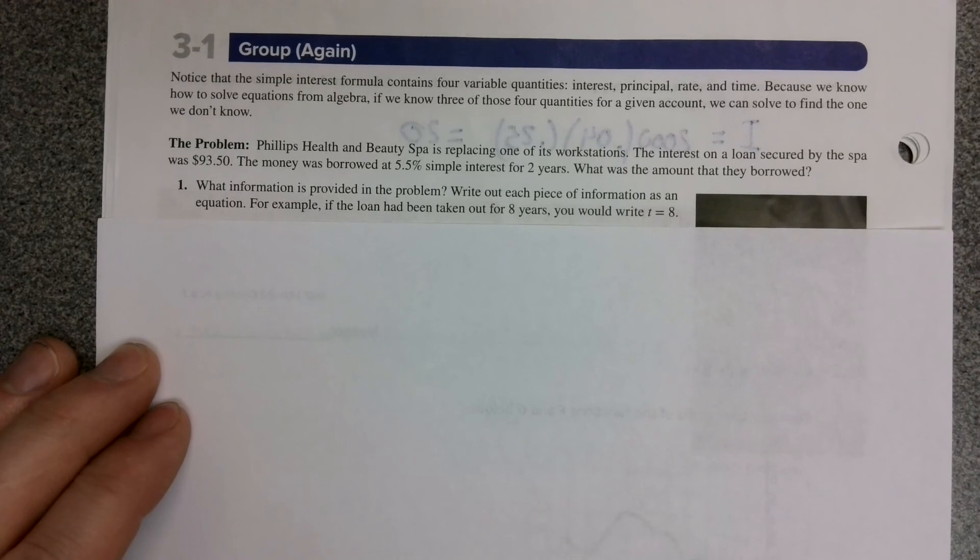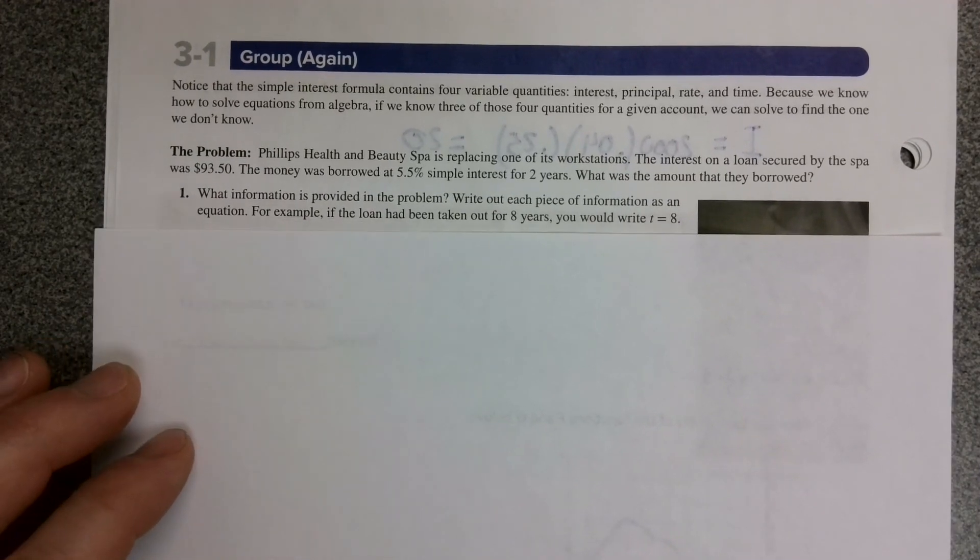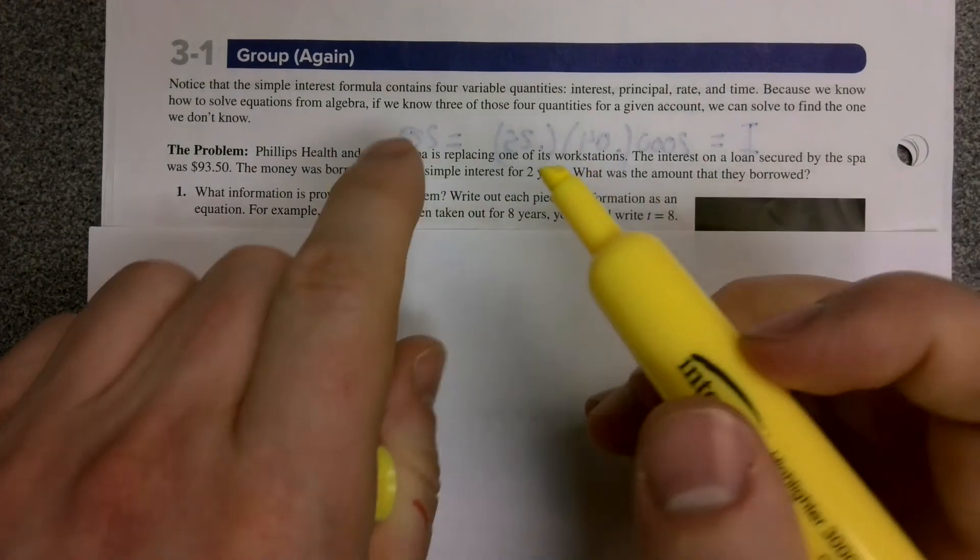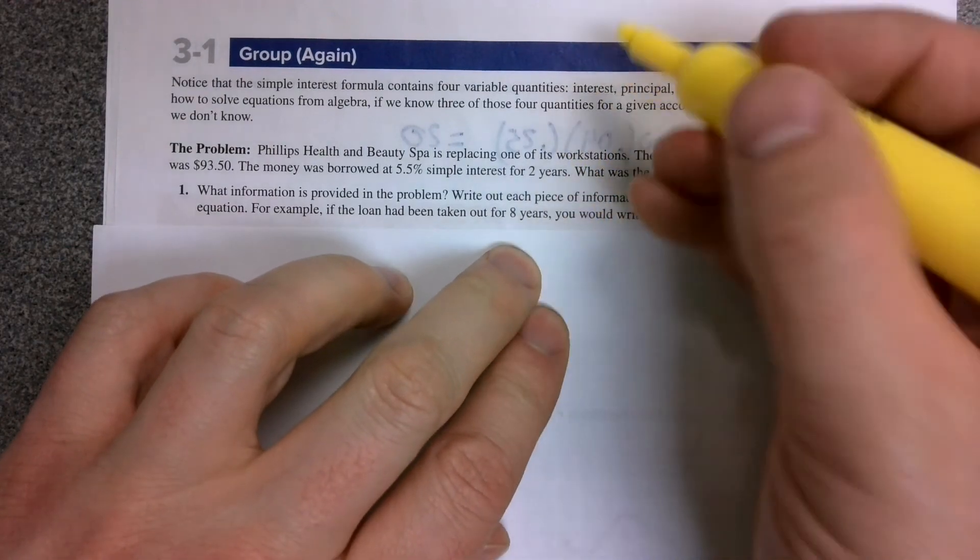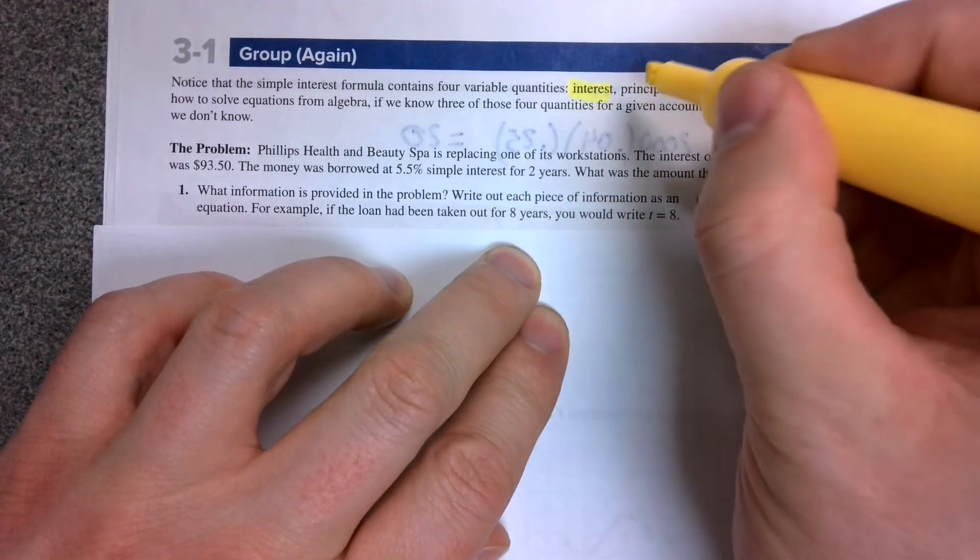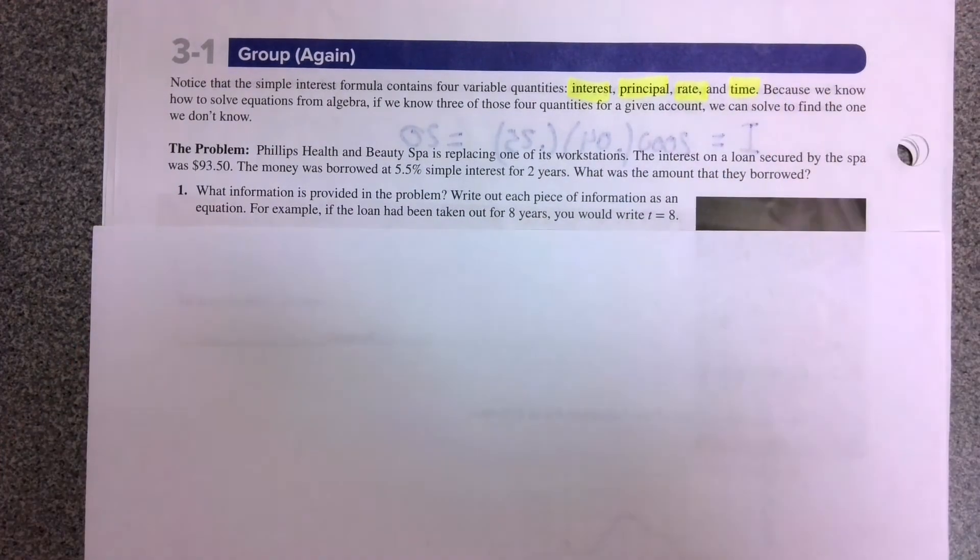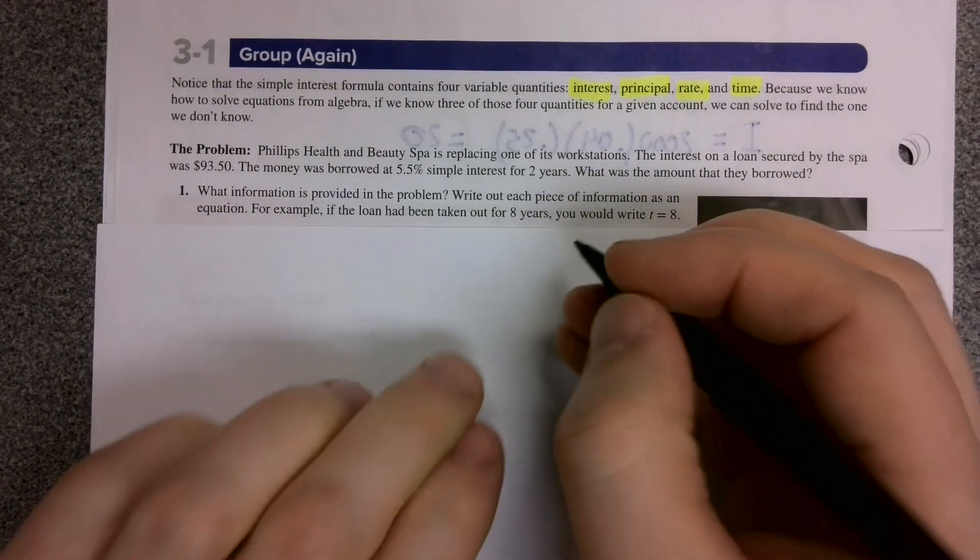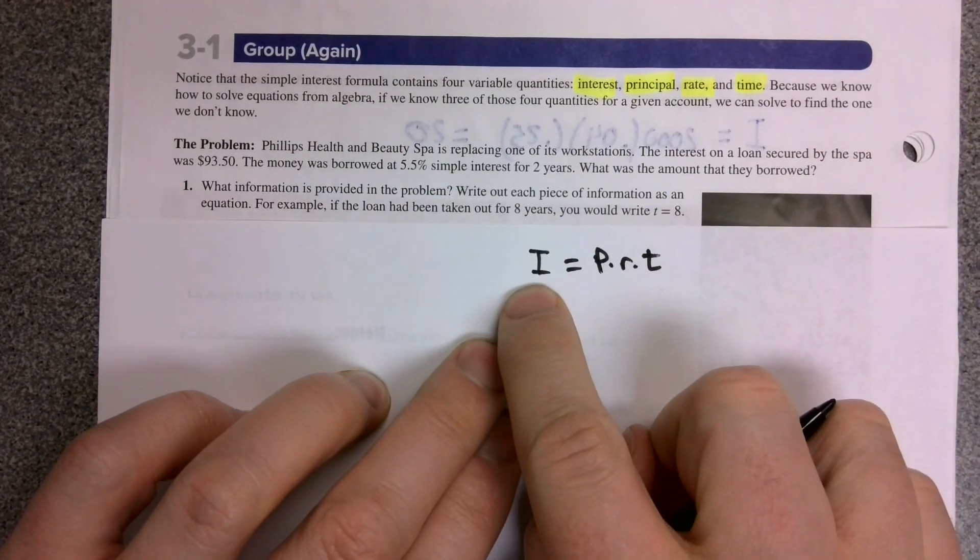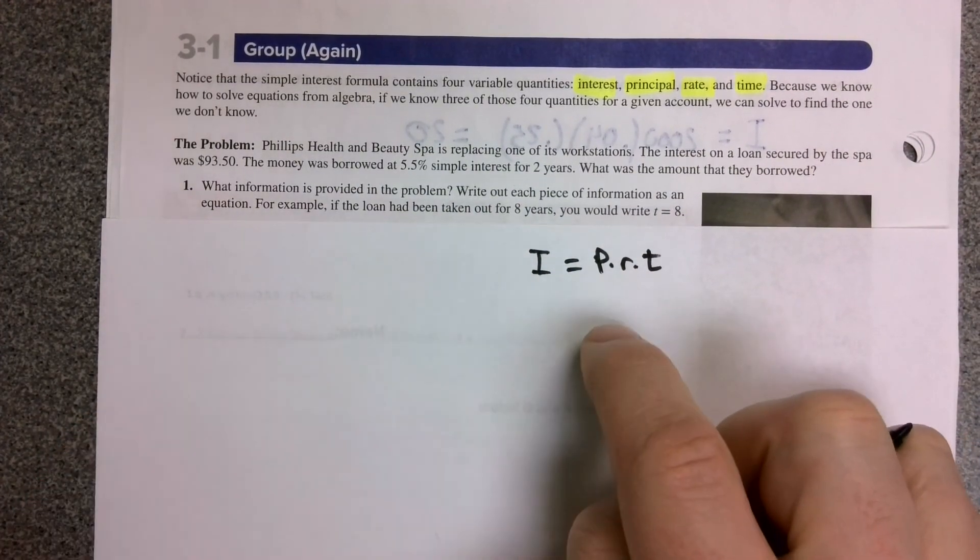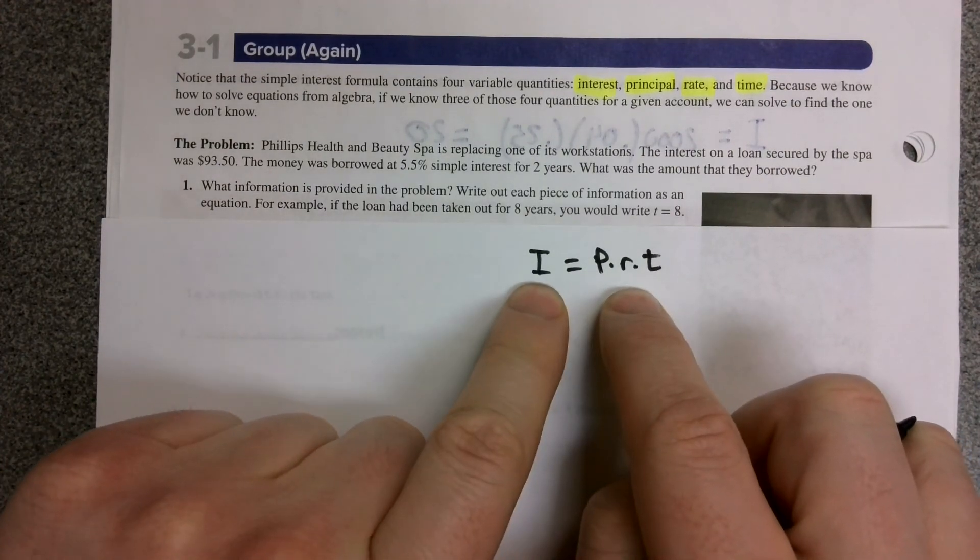Now let's look at some other types of applications of that simple interest formula. Note that there are actually four variables in that formula: the interest (I), the principle (P), the rate (the percent), and the time (T). We're taking this formula, I equals P times R times T, and noting that there's four quantities here. So far, we've been given these three, and we've calculated interest. But what if we wanted to find other different things?